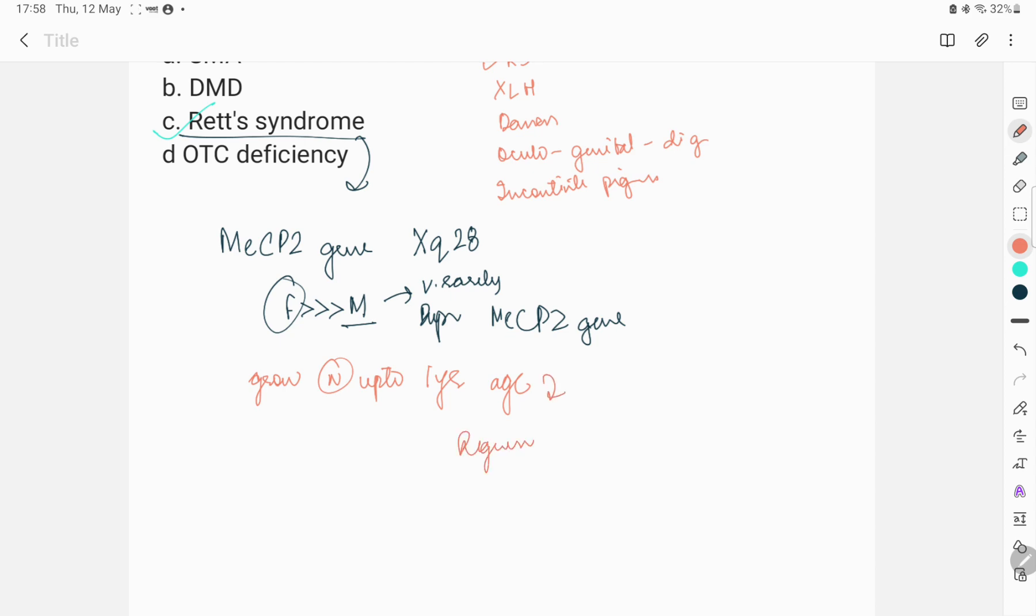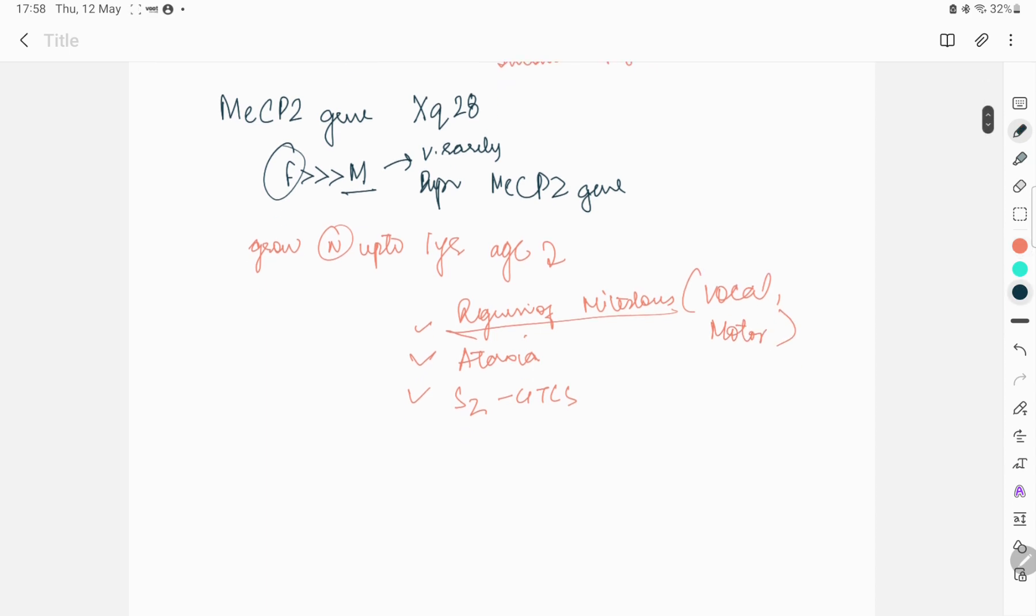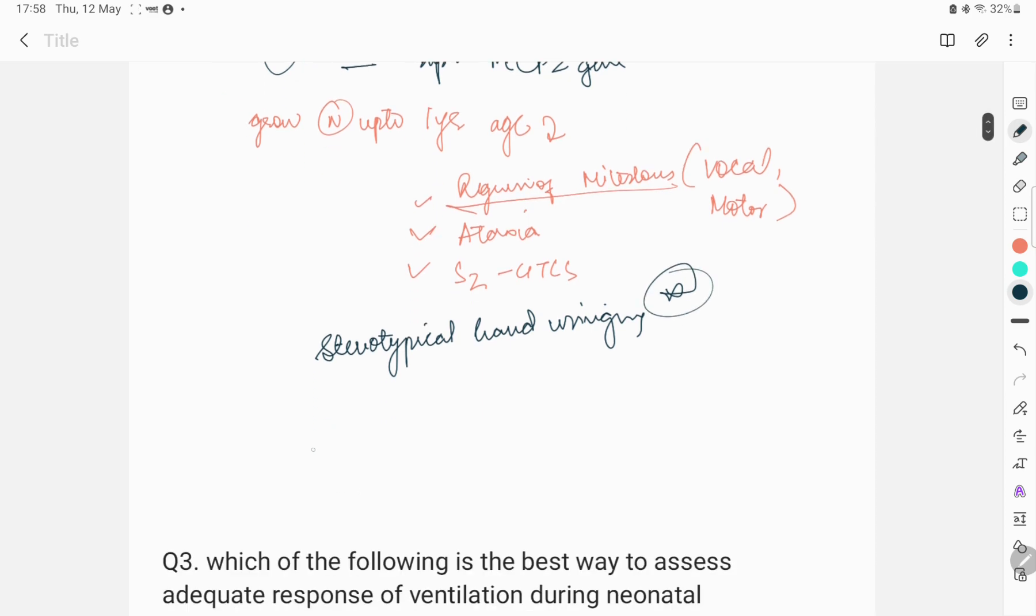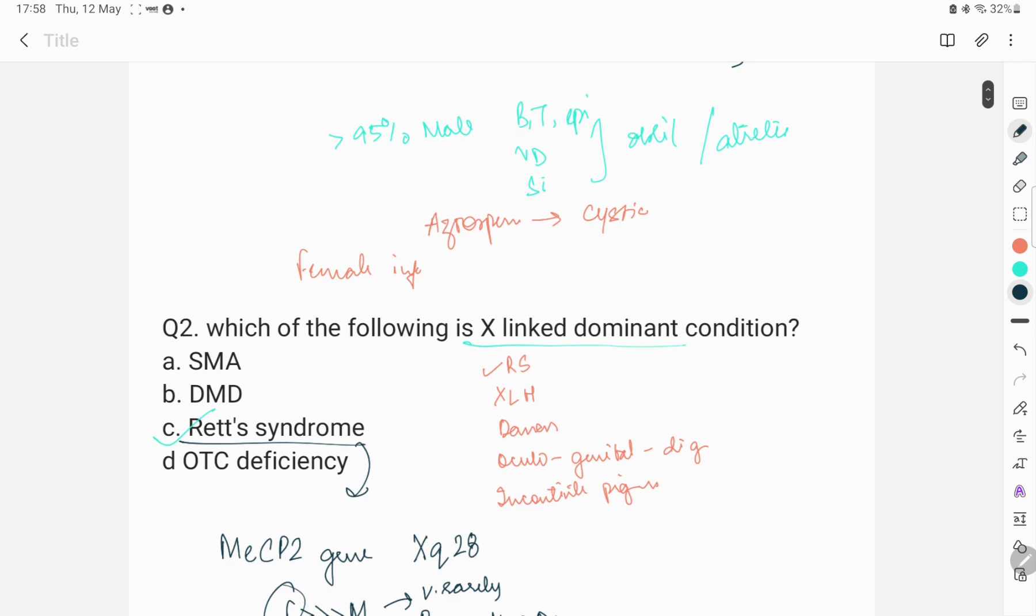Ataxia and seizures. You can see these three things. Regression of milestones, ataxia, seizures that are generally generalized tonic-clonic seizures. Regression of milestones, mostly vocal and motor milestones. Regression and the hallmark of Rett syndrome is there are stereotypical wringing hand movements. This is the hallmark. Also, Rett syndrome is an important cause of acquired microcephaly.